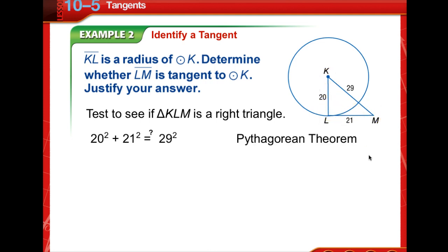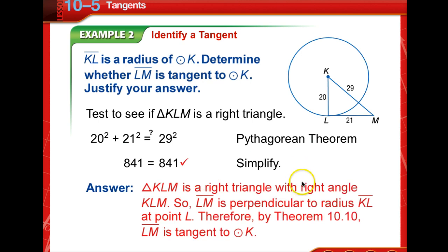So we're going to use the Pythagorean Theorem, and remember the hypotenuse is the side always opposite the 90 degree angle, it's also the longest side. And we do find that 841 is equal to 841, so we indeed have a right triangle. So segment LM is perpendicular to radius KL at point L. Therefore, by Theorem 10-10, segment LM is tangent to circle K.